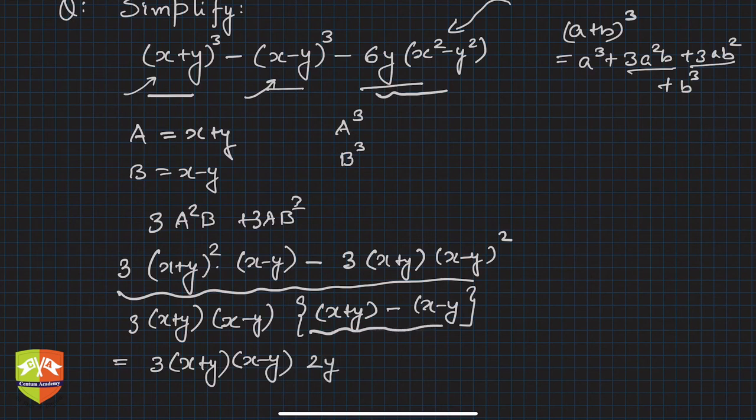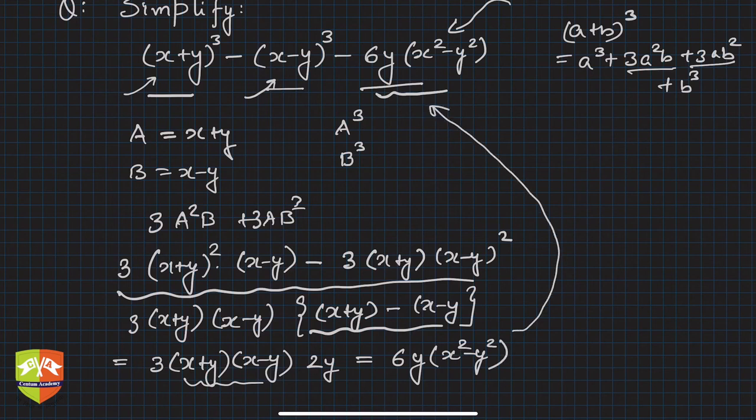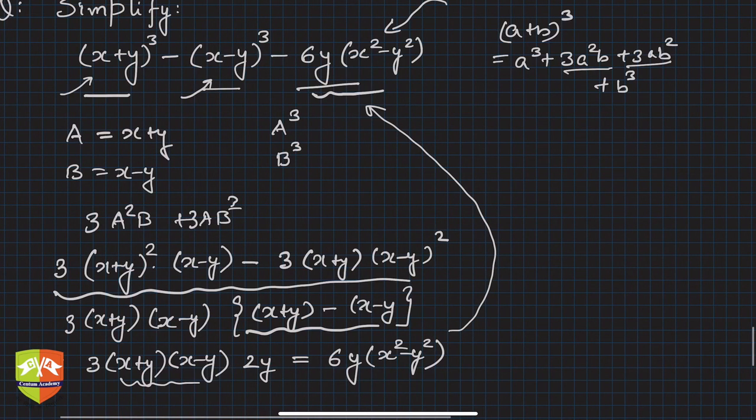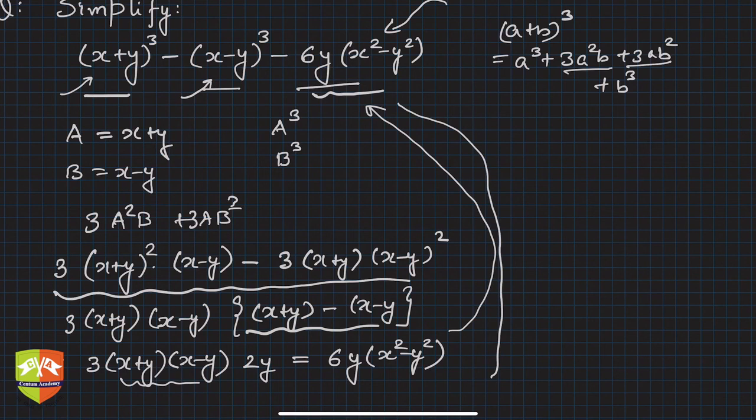So the expression would be 3(x+y)(x-y) and this term is nothing but 2y. Then this becomes 6y, and (x+y)(x-y) is the (a-b)(a+b) form: x²-y². Surprisingly, this matches my expression here.